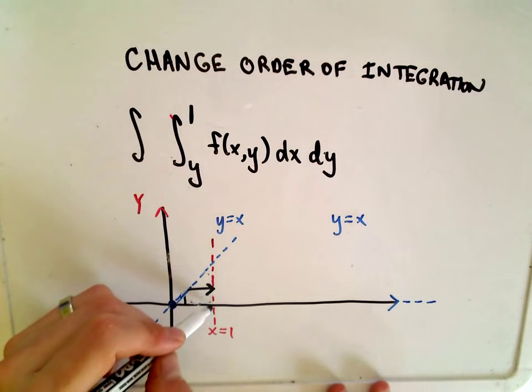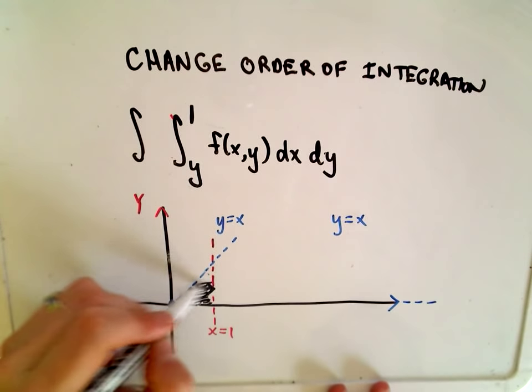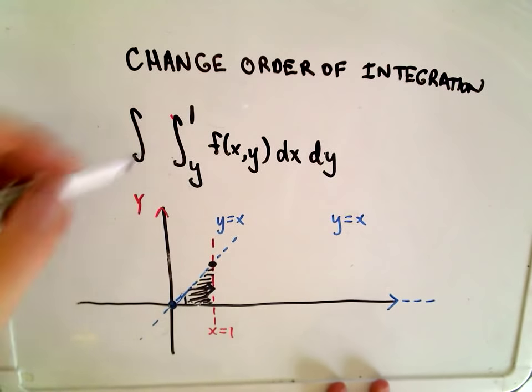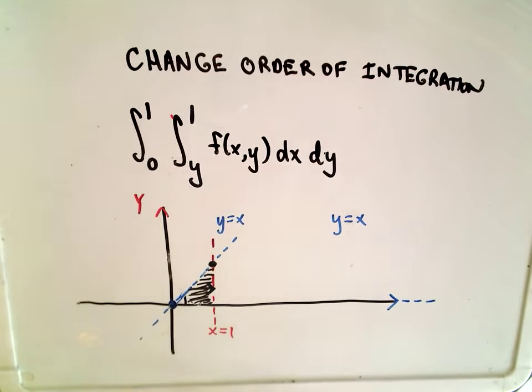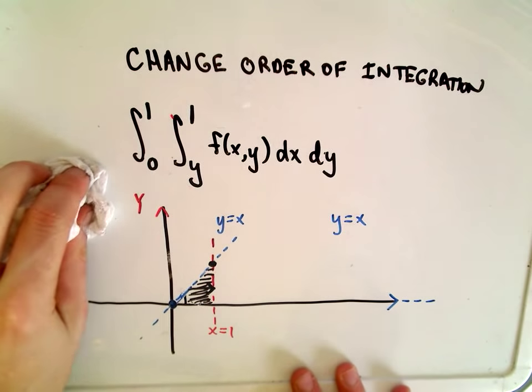Now I do the same thing. I think about what's the smallest y coordinate to the largest y coordinate. Well, the smallest y coordinate would be 0. The largest y coordinate would simply be 1. And now we've got an equivalent integral just simply by switching out the limits of integration.